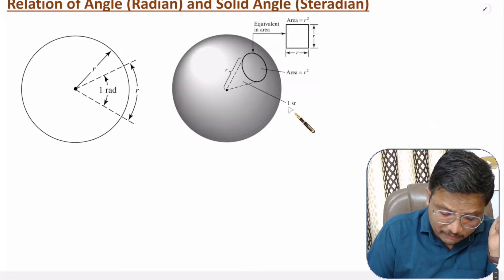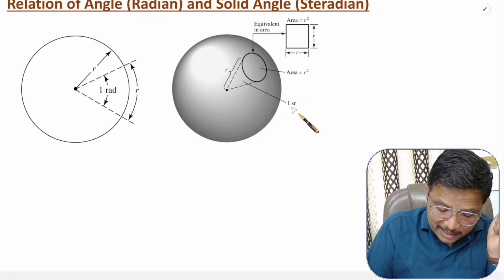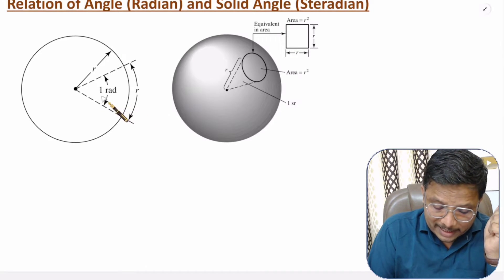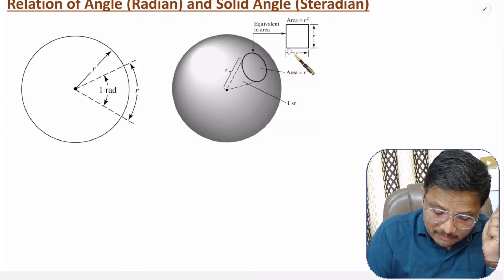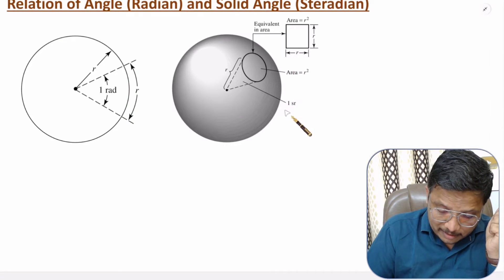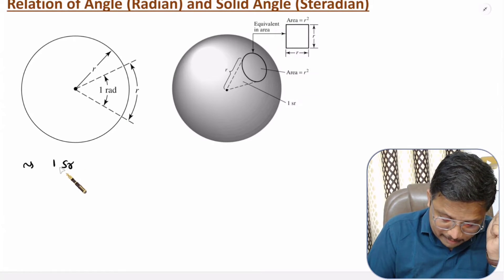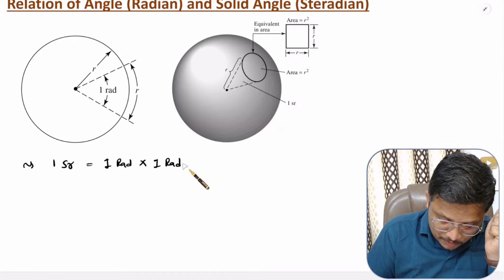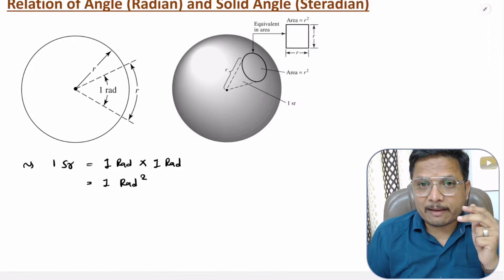If you want to express 1 steradian in terms of radian, it equals 1 radian × 1 radian, because 1 dimensional angle of 1 radian into another dimension of 1 radian results in 1 steradian. So 1 steradian equals 1 radian squared.